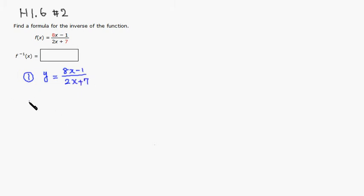Alright, so number 2, step number 2, we're going to solve for x. So first thing we do is, since I don't like fractions, so I'm going to multiply both sides by quantity 2x plus 7. Alright, so let's do that.